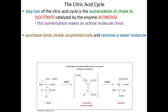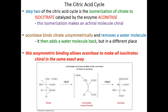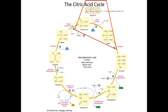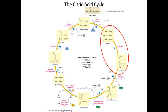The isocitrate that we make is in the L form. Intermediates of the citric acid cycle are used for anabolism, and alpha-ketoglutarate — an intermediate we will meet soon — is one of the primary precursors for amino acid biosynthesis. Amino acids are chiral and only come in the L form. By introducing chirality in the same way for every isocitrate molecule and making every single isocitrate in the L form, we are setting the stage for all of our amino acids being in the L form as well. For the purposes of the citric acid cycle, step two is the isomerization of citrate into isocitrate catalyzed by aconitase.